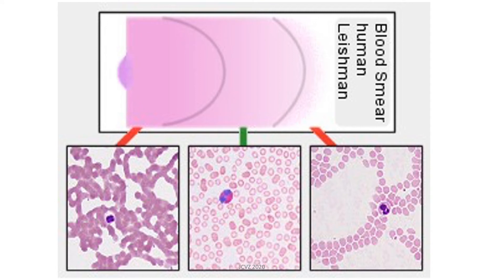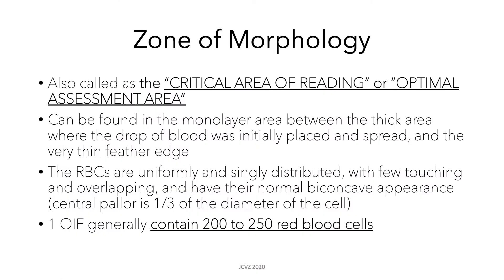The zone of morphology is also called the critical area of reading or the optimal assessment area, and can be found in the monolayer area between the thick area where blood was initially placed — otherwise known as the body — and the very thin feathered edge, otherwise known as the tail. In this area, the RBCs are uniformly and singly distributed with few touching and overlapping, and they also have their normal biconcave appearance with a central pallor in the one-third diameter of the cell.